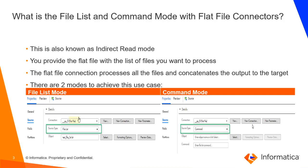Let's quickly review what is the file list and the command mode with the flat file connectors. This is also called an indirect read mode, where you can provide the flat file connection with the list of files you want to process. The flat file connections will process all the files and then concatenate the output to a target. There are two modes to achieve this: the first one is the file list option and the second one is the command mode option.